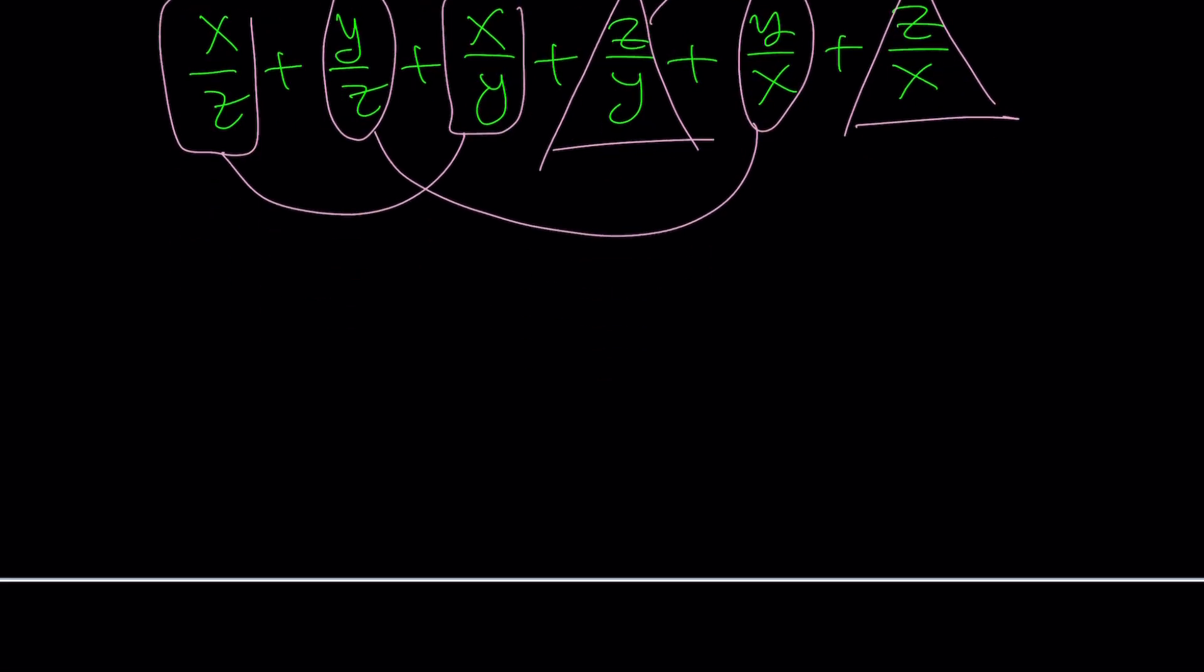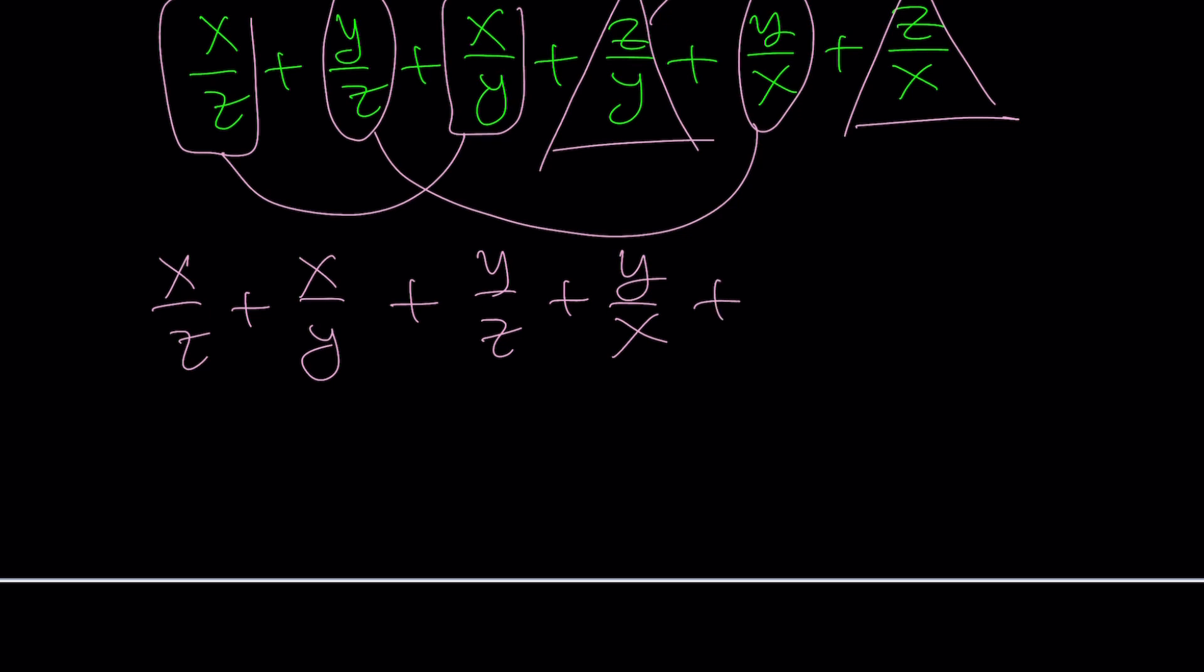So let's go ahead and pair these two up. And then I'm going to pair up this with this because they have the same numerator. And then finally, I'm trying to use different shapes, so kind of like shape coded. And these two things. If you put those two together, like, for example, x/z plus x/y, and then y/z plus y/x, and finally, z/y plus z/x. Great.